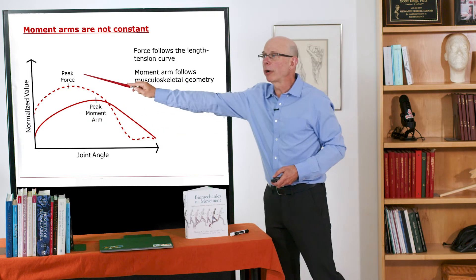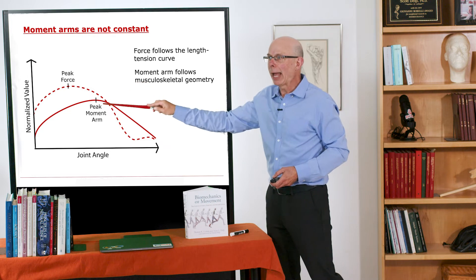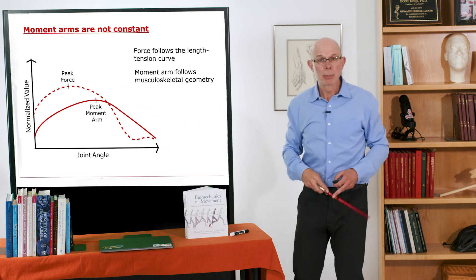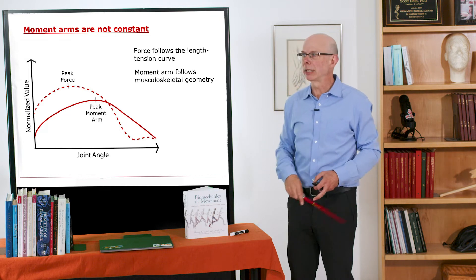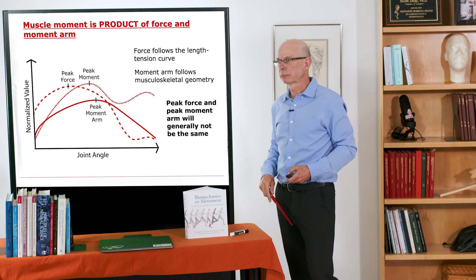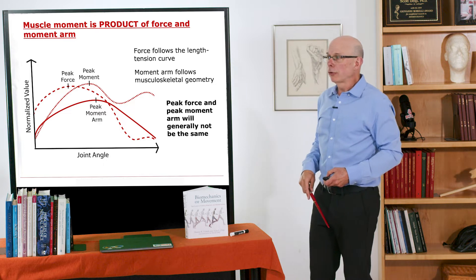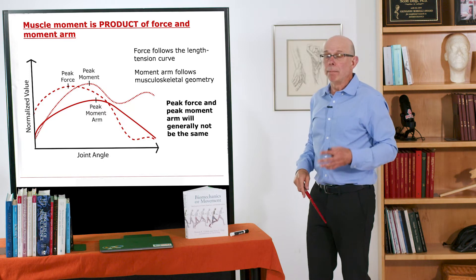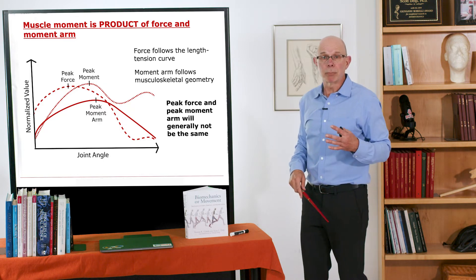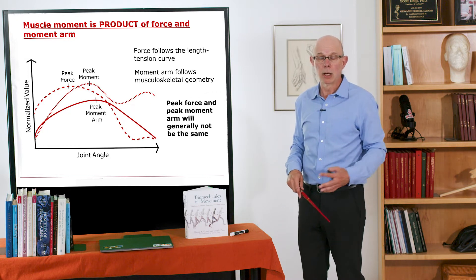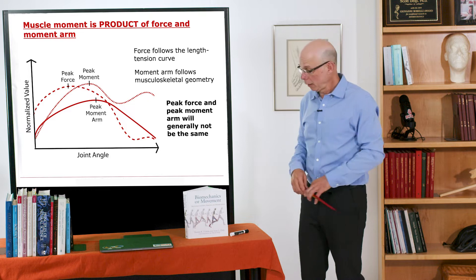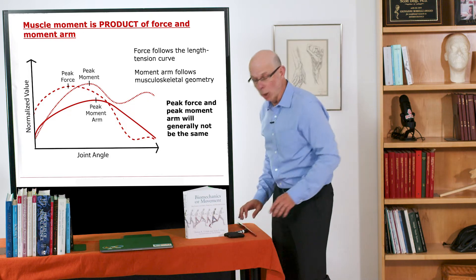We have an angle where there's force peak and an angle when there's moment peak, but the peak strength, the peak moment, actually occurs when the product of these peaks. So the peak moment, because moment is the product of muscle force and moment arm, doesn't necessarily occur where the peak force occurs or where the peak moment occurs.